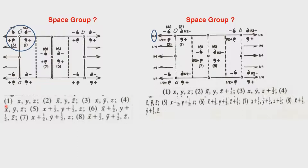If you look at the first four equivalent points, you will see a similarity between this and the P 2/m space group which we saw a few slides before. Therefore this is 2/m and this is a C-centered lattice. So this space group must be C 2/m.